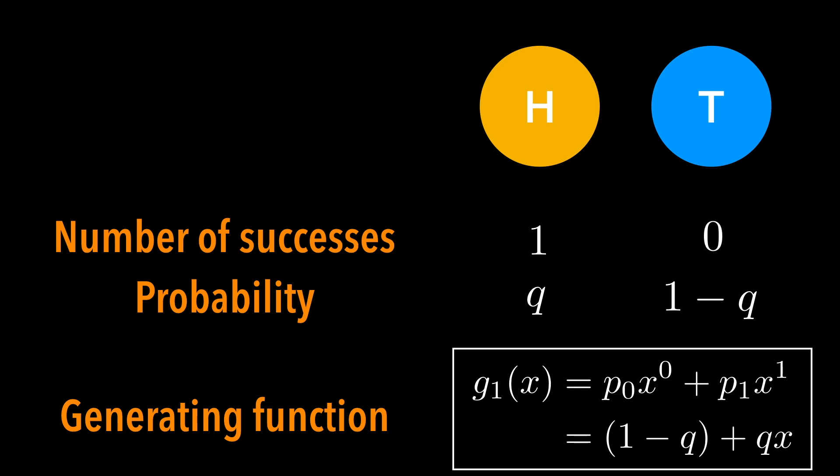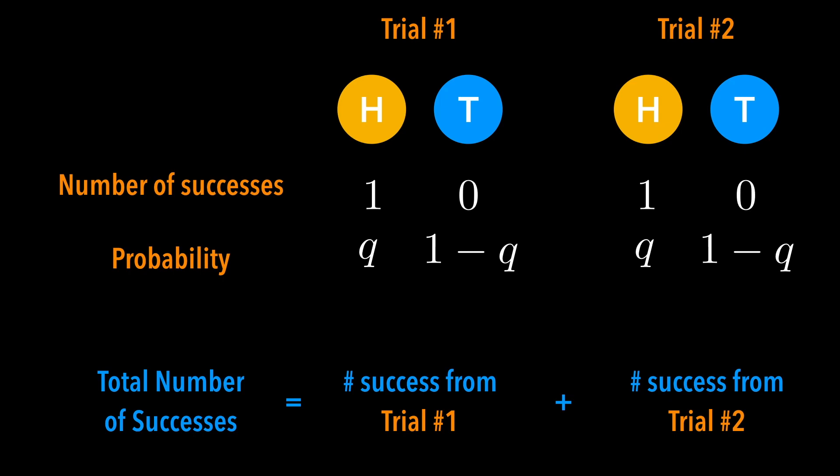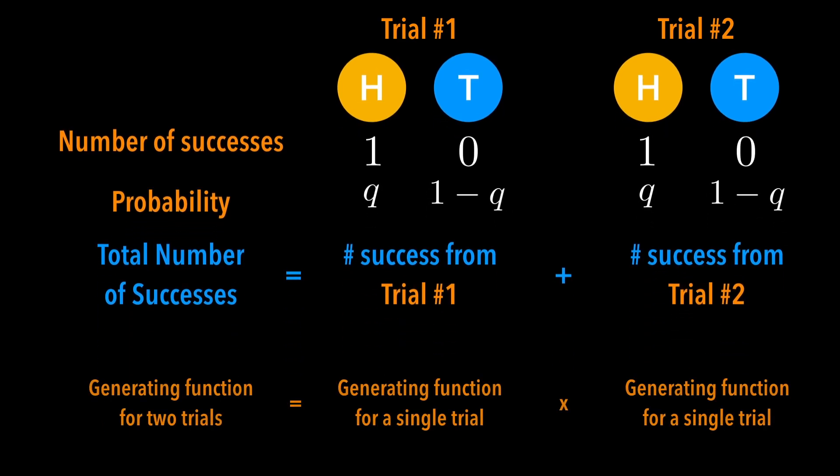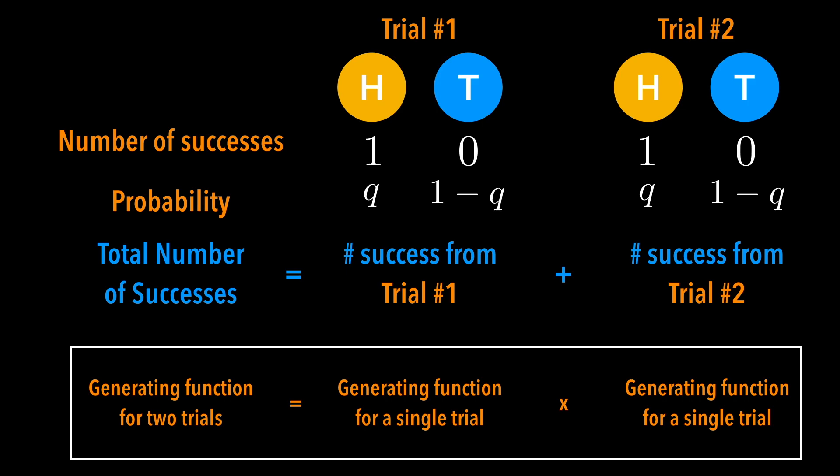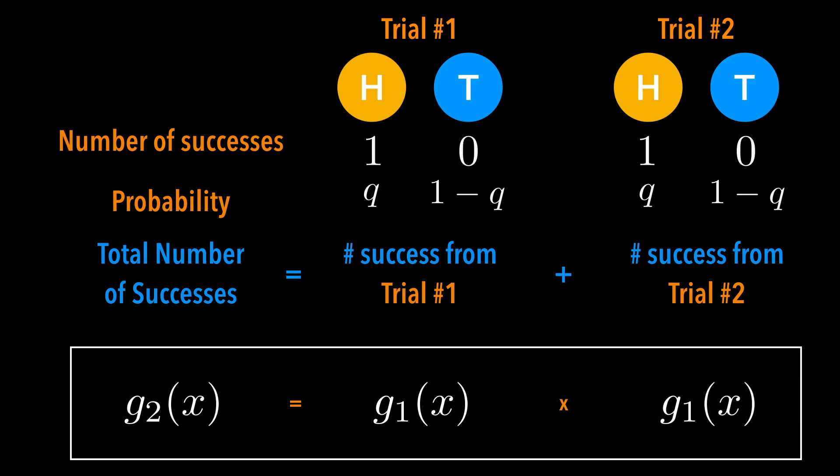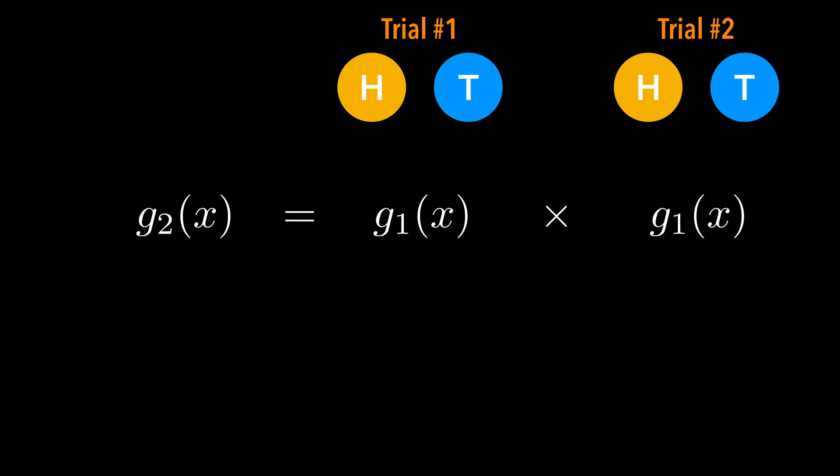Now let's think about adding just one more trial to this. If you have two trials, then the number of successes is simply the sum of the number of successes in each individual trial. Can you think of how we can obtain the generating function for these two trials? Yeah, because they are exactly the same and because it is about the total number of successes, we can obtain the new generating function by squaring the original generating function for the single trial. So g2 becomes g1 squared and looks like this.